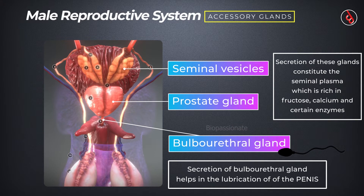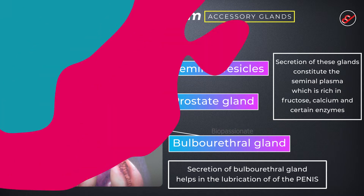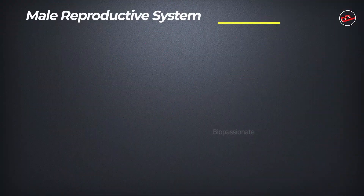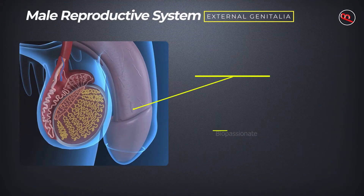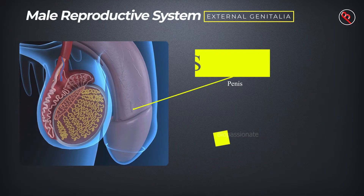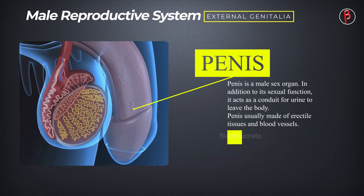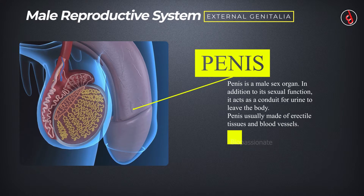The seminal fluid also maintains the viability and motility of the sperms. The secretion of bulbourethral glands helps in the lubrication of the penis. The penis is the external genitalia which, in addition to its sexual function, acts as a conduit for urine to leave the body. The penis is usually made of erectile tissues and blood vessels.